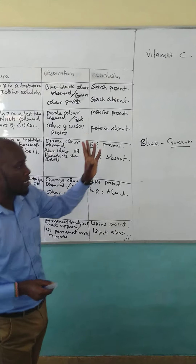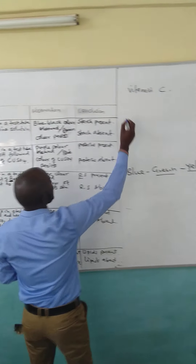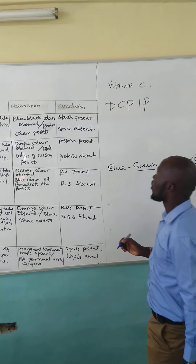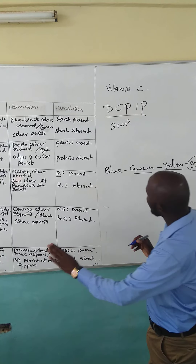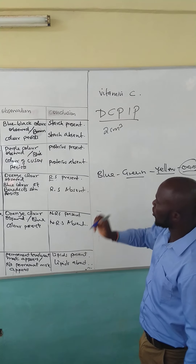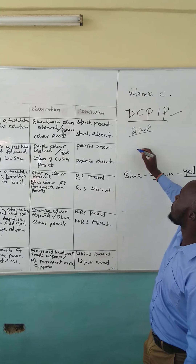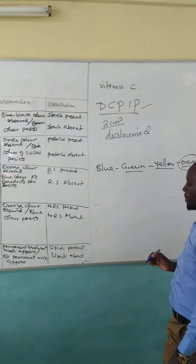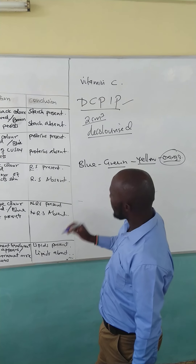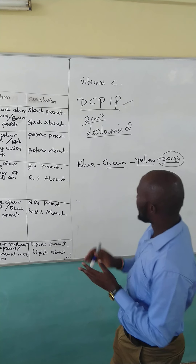The last thing we will talk about is vitamin C. This has an opposite procedure, where you now put the reagent — which is DCPIP, that is dichlorophenol-indophenol — first. Put two cubic centimeters of DCPIP in a test tube, then add solution X drop by drop. The blue color of DCPIP will be decolorized — the conclusion is vitamin C present. But if the blue color of DCPIP is not decolorized, then the conclusion is vitamin C absent.